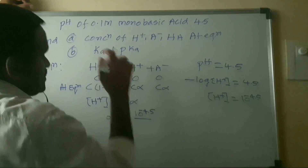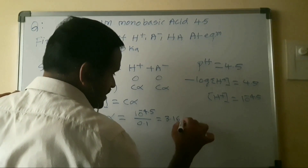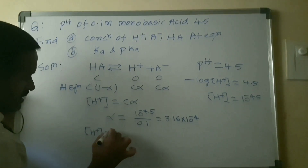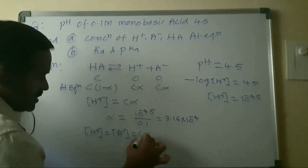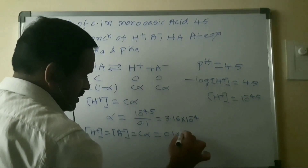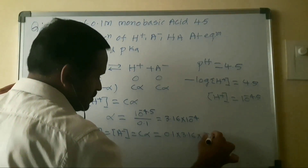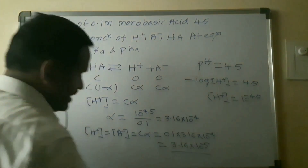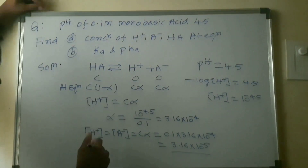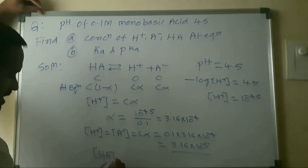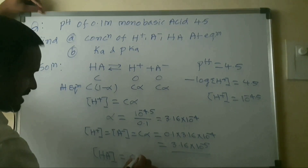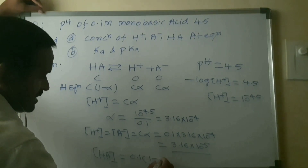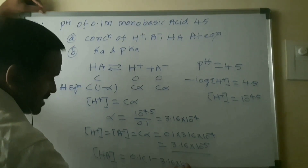With C = 0.1 and H⁺ = 10⁻⁴·⁵ = 3.16 × 10⁻⁵, the A⁻ ion concentration = Cα = 0.1 × 3.16 × 10⁻⁴ = 3.16 × 10⁻⁵. The concentration of HCA (undissociated acid) = C(1 − α) = 0.1 × (1 − 3.16 × 10⁻⁴) ≈ 0.1.